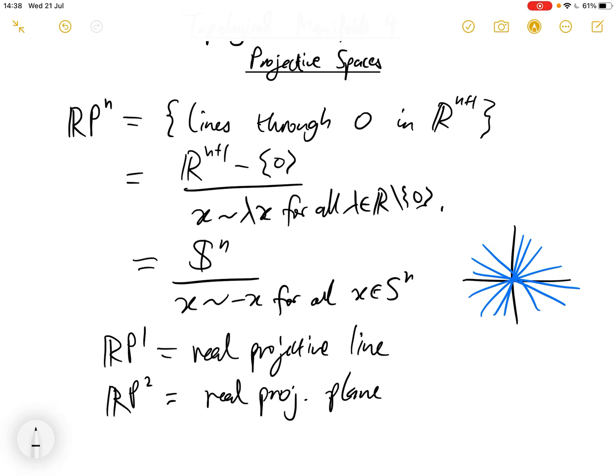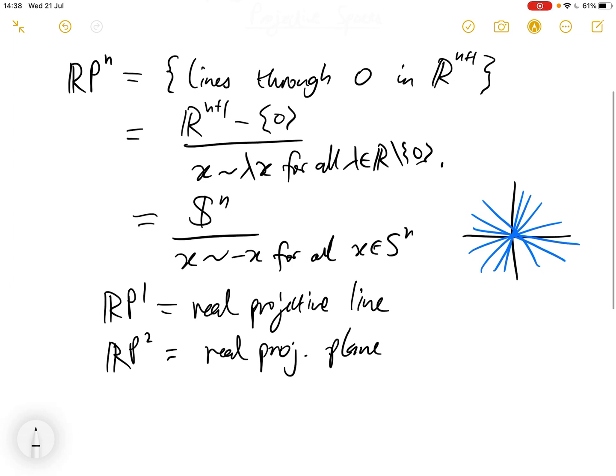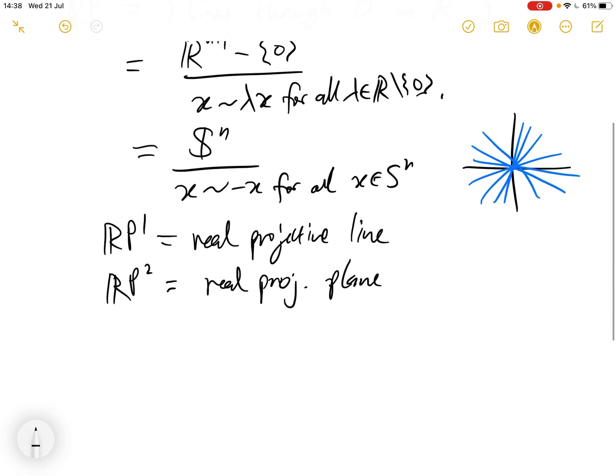So we want to prove that RPn is a manifold. And I'm going to break the proof up into a few stages. So in this video, we're only going to give the proof that RPn is Hausdorff.